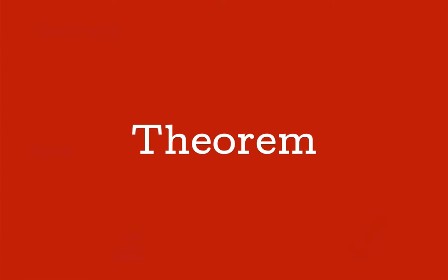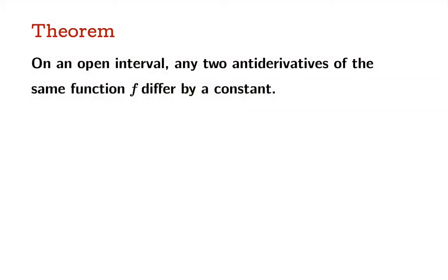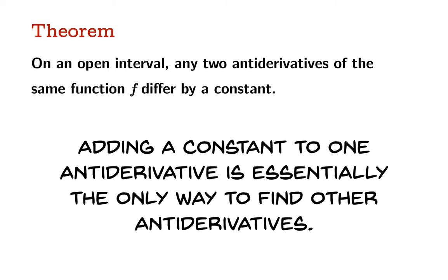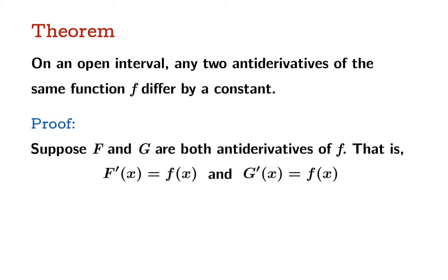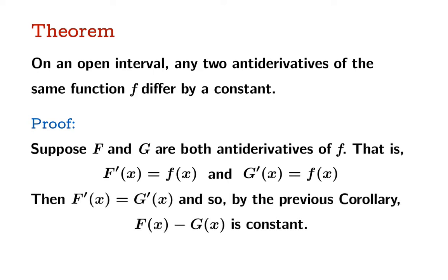Now this sets us up for the big theorem, which is going to be easy to prove now that we've got the lemma and its corollary. On an open interval, any two antiderivatives of the same function f differ by a constant. In other words, adding a constant to one antiderivative is essentially the only way to find other antiderivatives. Suppose F and G are both antiderivatives of f — that is, capital F prime and capital G prime both equal little f. Then of course the values of these two derivatives are equal to each other, so by the previous corollary the difference function is constant. And that's your proof.